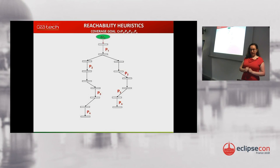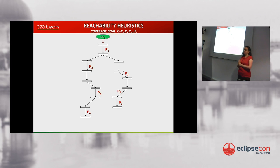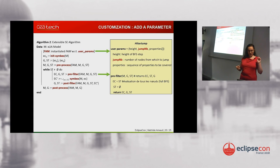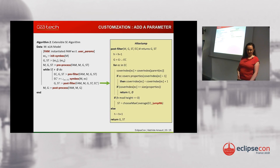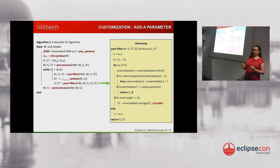This approach is highly customizable and modular. If instead of keeping one path I want to keep two or more when doing a jump, I only have to change two things: add the new parameter at the beginning, and modify the behavior when reaching the max BFS height so that ChooseMax coverage picks more execution contexts to continue with.